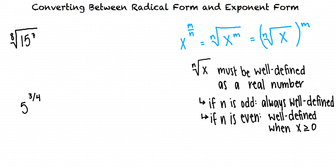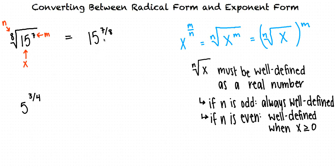Based on the conversion equation, we can identify n as 8 and m as 7. x is 15. Now that we've identified x, m, and n, we can rewrite this radical expression as an exponential expression. The 8th root of 15 raised to the power of 7 is equal to 15 raised to the power of 7 eighths.